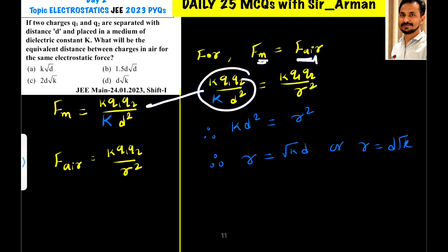Now, force in medium is given by this equation k Q1 Q2 by k d square and that equals force in air given by this equation k Q1 Q2 by r square. So, k Q1 Q2, k Q1 Q2 cancel. So, k d square equals r square.